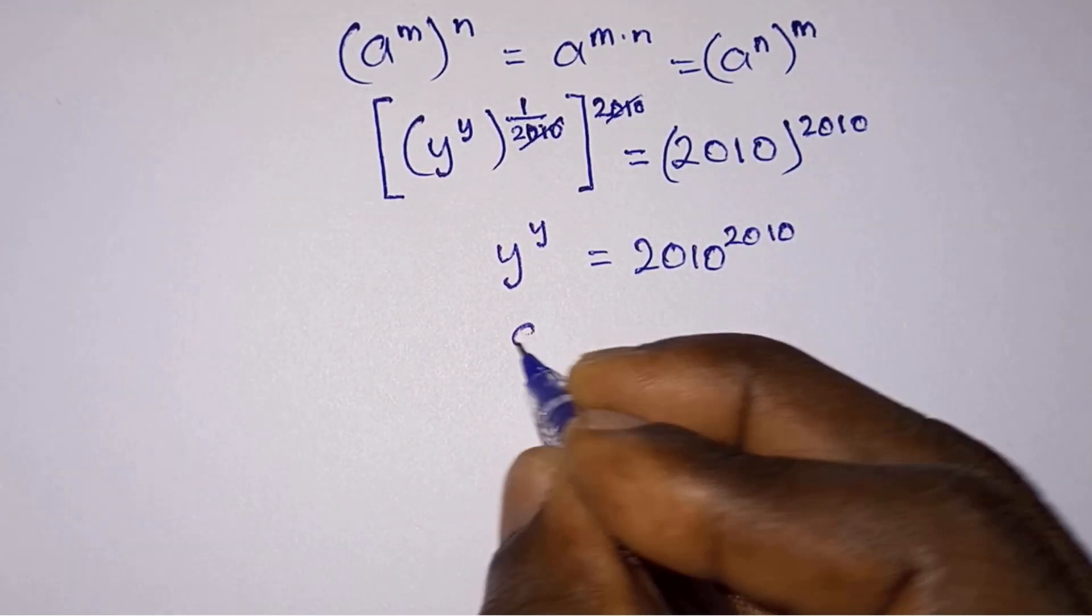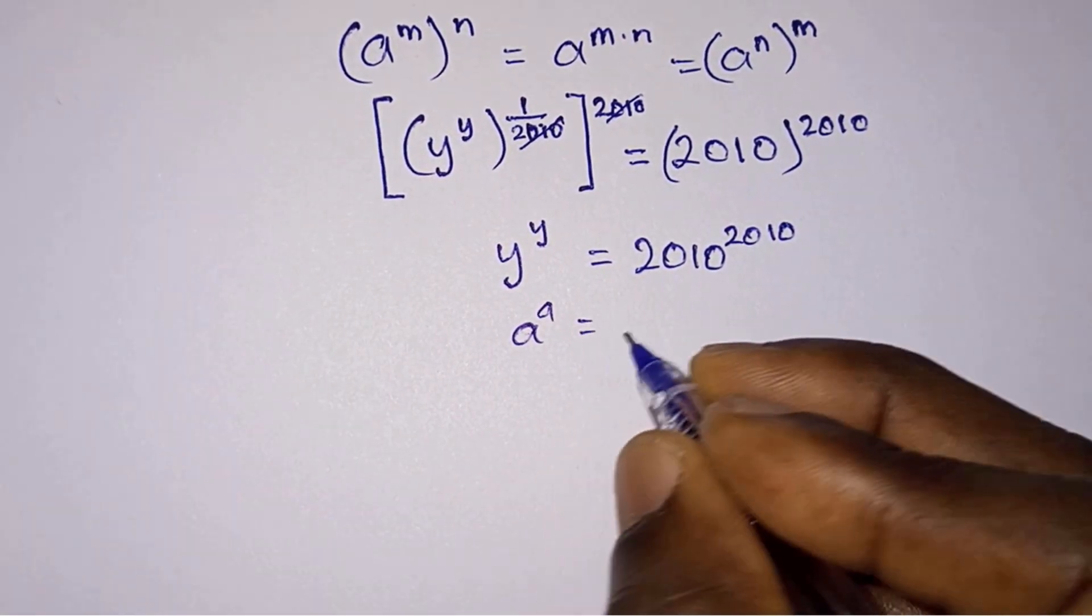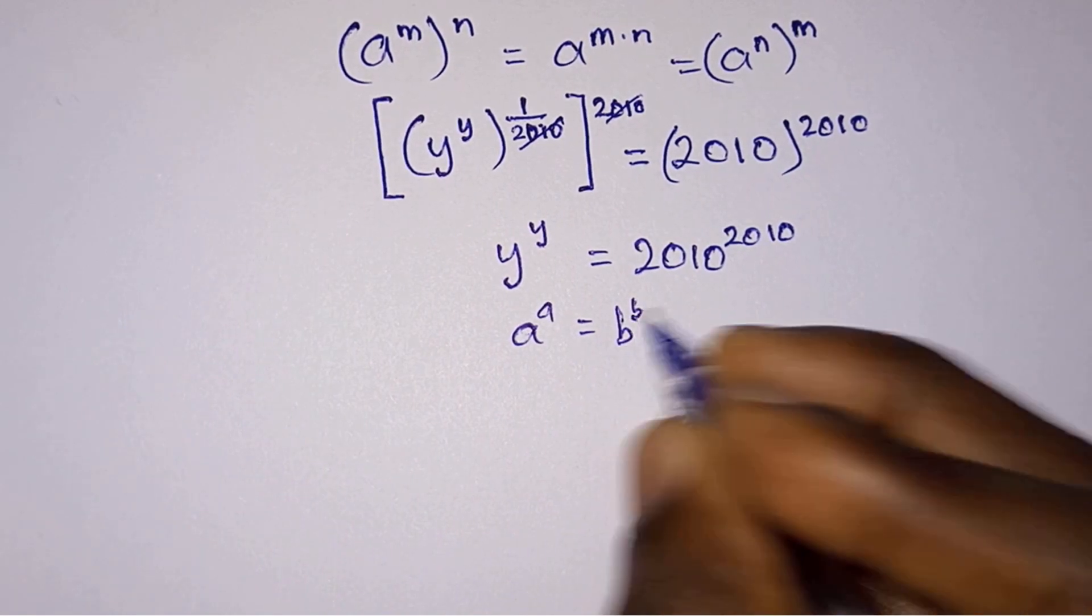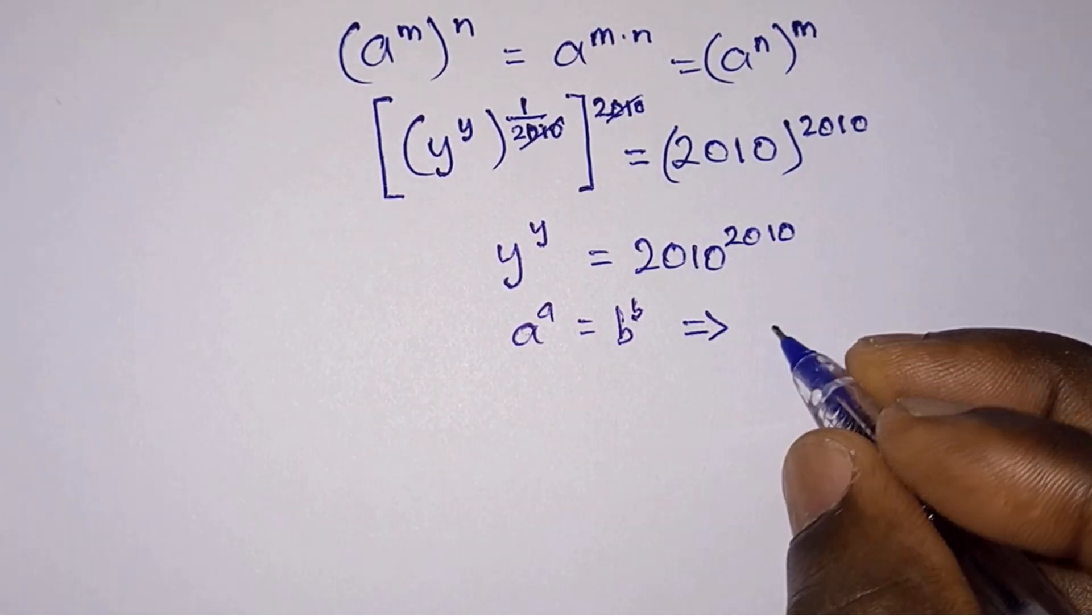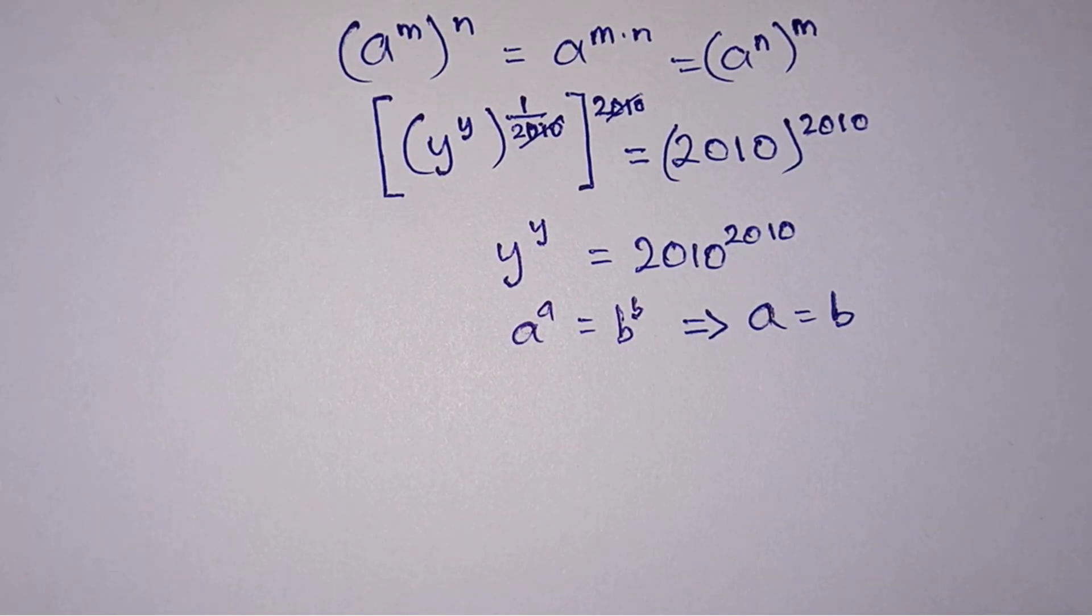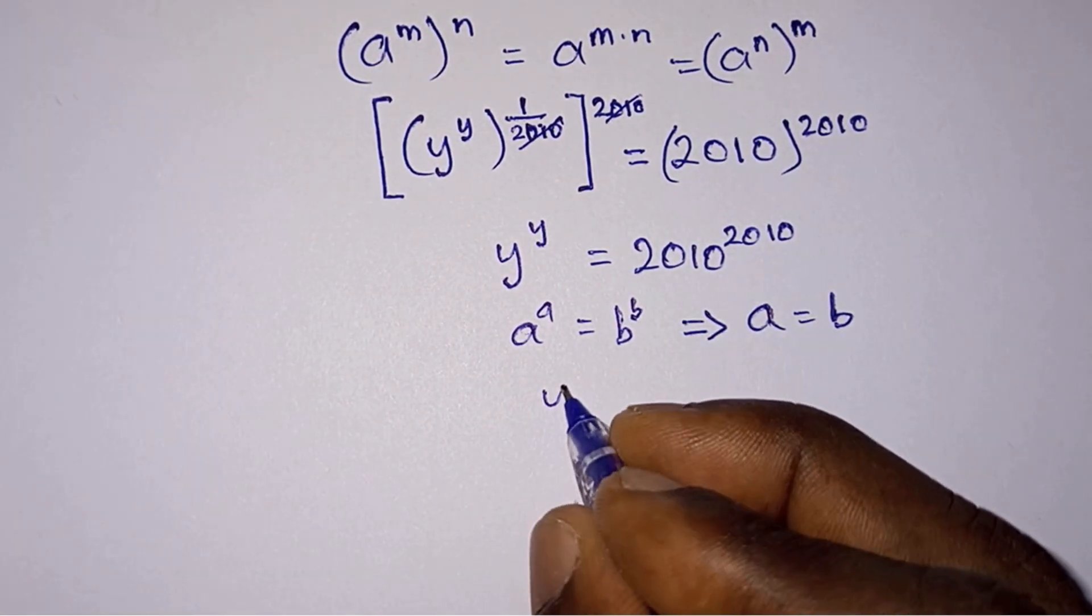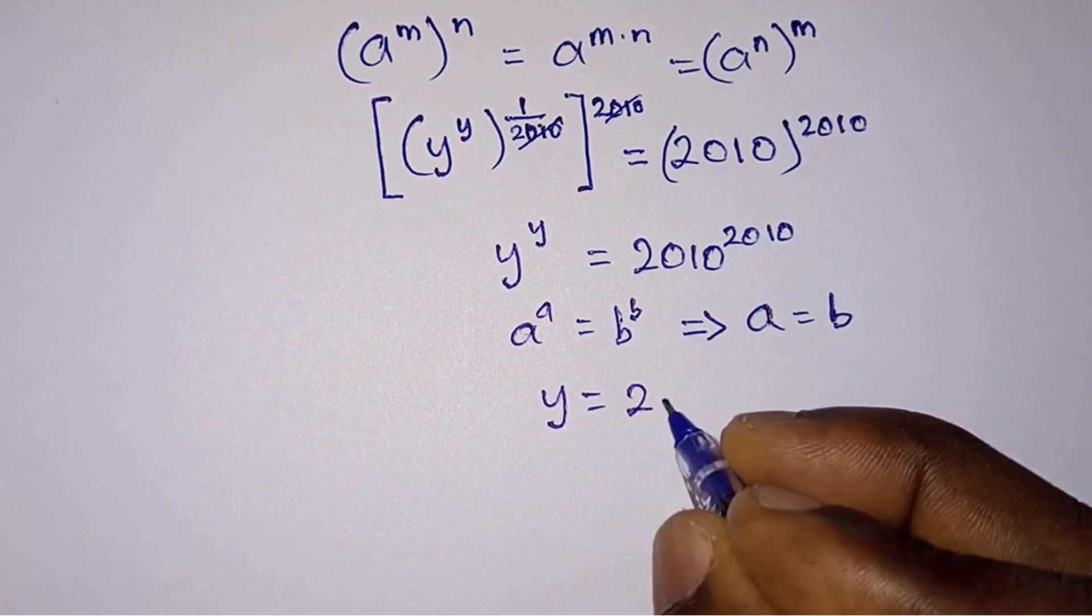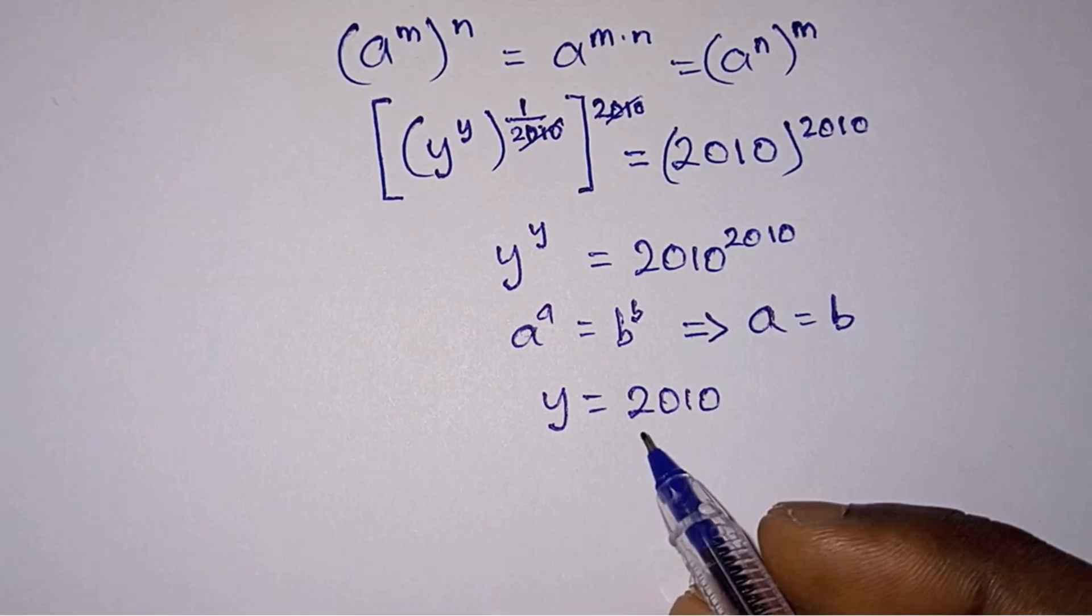y to the power y is equal to 2010 to the power 2010. Now note that if you have any equation of the form a to the power a equals b to the power b, then straight away we can say that a is equal to b.